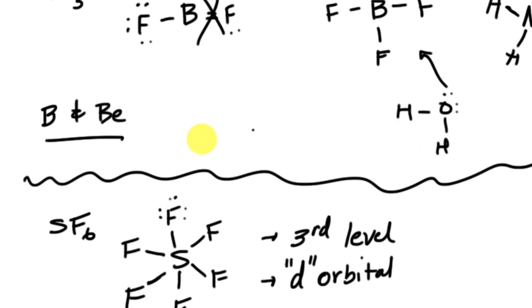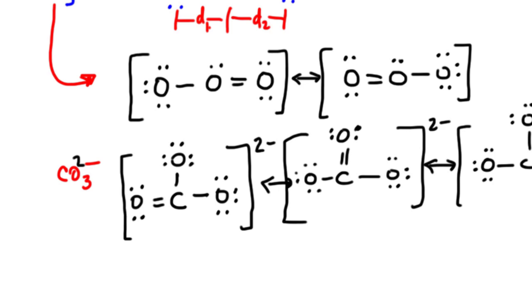Anyway, that's a little bit more than you need, but watch for the deficient octets. Watch for the expanded octets, third energy level d orbitals, beryllium and boron for the deficient, and don't forget about resonance. All right, thanks a lot, guys.